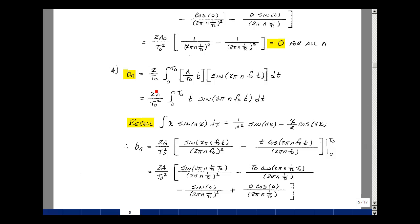b sub n is equal to 2 over t0, integral over a period. Our function f of t now times the sine of 2 pi n f0 t, dt. Pull out the a over t0 in front. I'm left with the integral of t times the sine of 2 pi n f0 t.